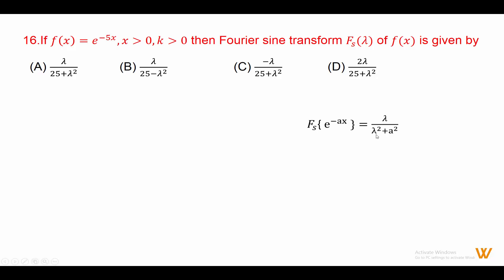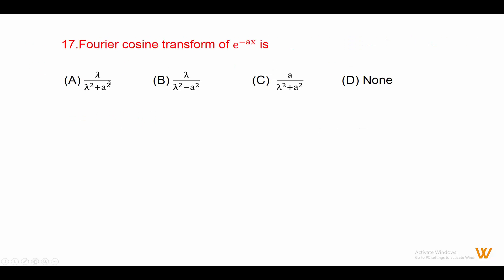The Fourier sine transform gives lambda upon lambda squared plus 25, so the answer is option A: lambda upon 25 plus lambda squared. Seventeen: the Fourier cosine transform of e raised to minus ax is Fc of e raised to minus ax equals a upon lambda squared plus a squared. Answer is option C.